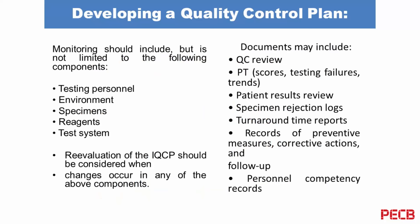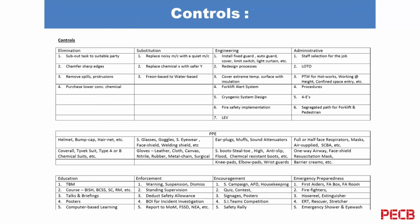To develop a quality control plan, you need to look at test personnel, the environment, the specimens, and the reagents. You look at controls: elimination, substitution, engineering, and administrative controls. Working through the life cycle of the whole process, you build a plan covering elimination, substitution, PPEs, and then communicate this to the staff. When you reach this phase, you have carried out a very solid risk assessment strategy.